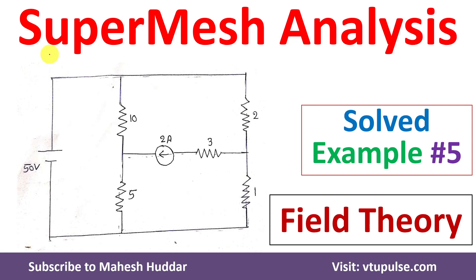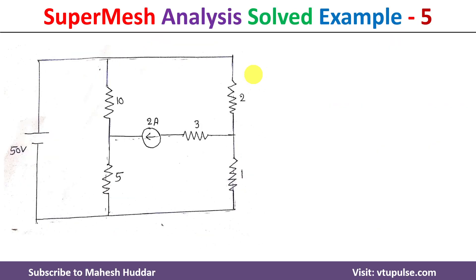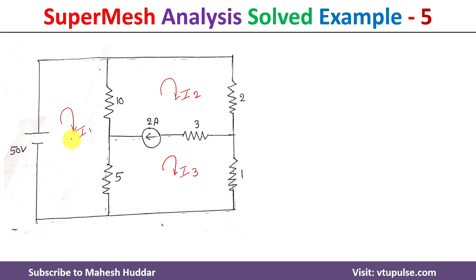Welcome back. In this video I will solve problems using super mesh analysis. In the previous video I have already discussed mesh analysis — links for those videos are given in the description below. In this problem we are trying to find the currents using mesh analysis, so first we need to assign the current for each loop. For the first loop I will assign current as I1, for the second loop as I2, and for the third loop as I3. As per the current direction we need to assign the sign for each resistance.